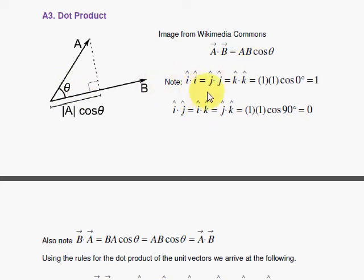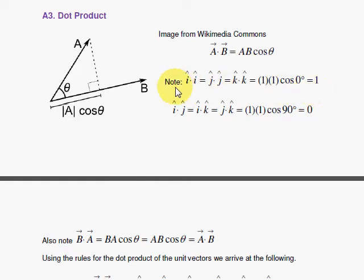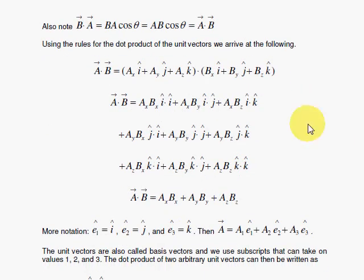For unit vectors, there are very simple results when we apply this rule. When you have one vector i-hat dotted with i-hat itself, each of the vectors has a length of one, whether it be i-hat, j-hat, or k-hat, because these are our unit vectors. The angle between a vector and itself is zero degrees, and cosine of zero is one, so you get one for the dot product of a unit vector with itself. When you take the dot product of a unit vector with one that's perpendicular to it — a 90-degree angle — the cosine of 90 is zero, so the dot product is zero.